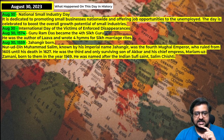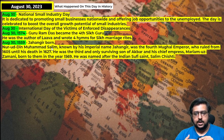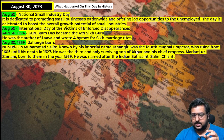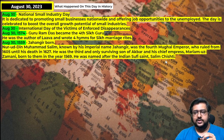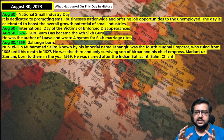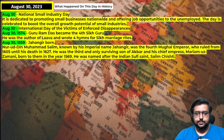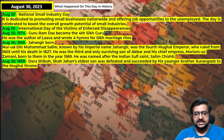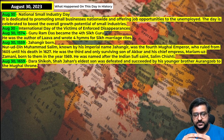Jahangir was born in 1569. His full name is Nuruddin Muhammad Salim — he is the son of Akbar and was born as the next Mughal Emperor. His mother's name was Maryam Uzzamani. He was named after the Indian Sufi saint Salim Chisti. This is an important fact — if an exam asks which Mughal ruler was named after a Sufi saint, the answer is Jahangir.